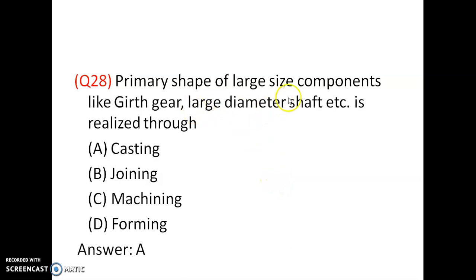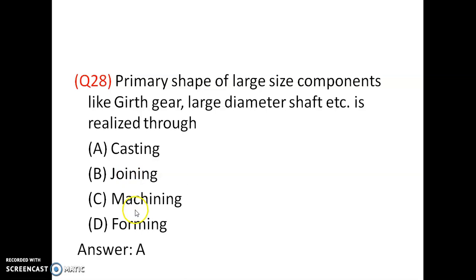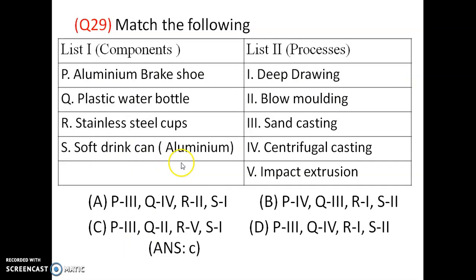The primary shape of large size components like a grit gear or large diameter shaft is realized through the process of casting. The options are casting, joining, machining, and forming. Option A, casting, is correct.